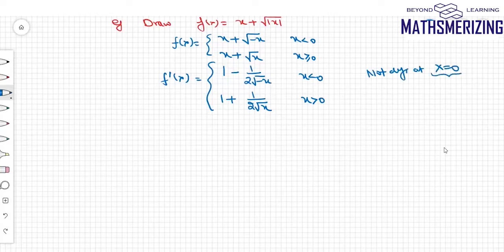So x equal to 0 is one of my critical points. And also if I'll put f'(x) equals to 0, I'll get x equals minus 1/4. So there are two critical points: x equal to 0 and x equals minus 1/4.